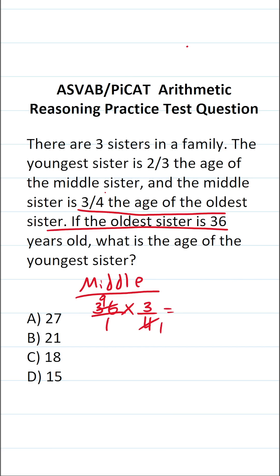This becomes 9 over 1, which is just 9, times 3 over 1, which is just 3. 9 times 3 is 27. So we know the middle sister is 27 years old.